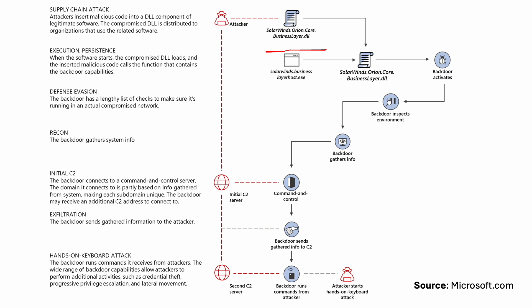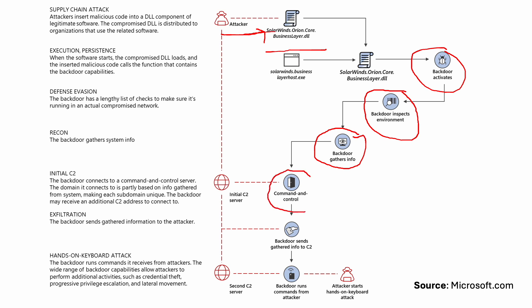Technically, there is a DLL — a dynamic link library — used by the Orion software that was attacked. This DLL had malicious code injected into it. When the software update was performed, this infected DLL was included in the update, which led to the backdoor being activated. The backdoor was very intelligent — it inspected the environment, gathered information, and was able to connect with a command and control (C2) center, allowing attackers to control the software from a different machine or server.